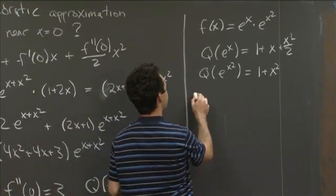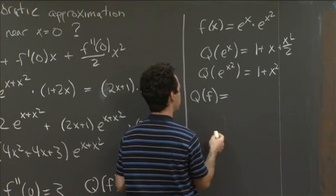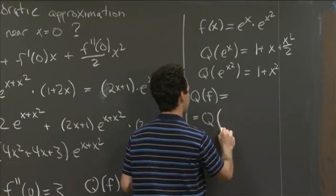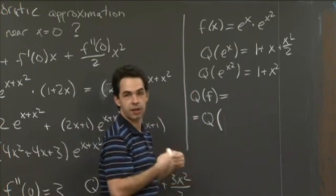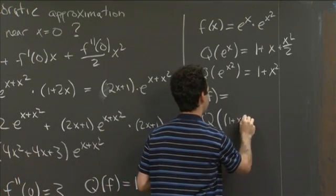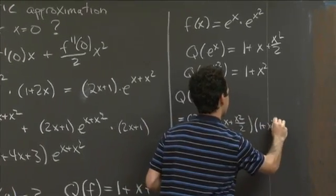So in this case, so that means that the quadratic approximation of f is equal to, by the rule Christine showed you, it's the quadratic approximation of the product of the quadratic approximations. So that's (1 + x + x²/2) times (1 + x²).